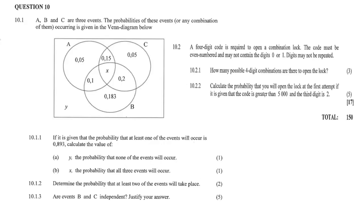Question 10 is, of course, the question on probability. In 10.1, A, B, and C are three events. The probabilities of these events or any combination of them occurring is given in the Venn diagram. Please take a good look at the Venn diagram and make sure you understand exactly what each value represents.